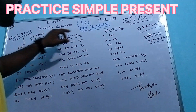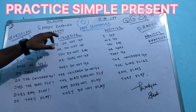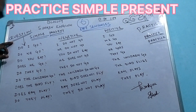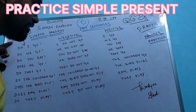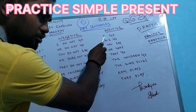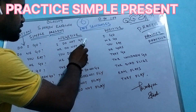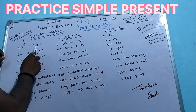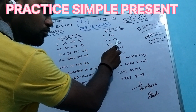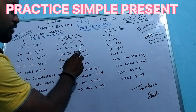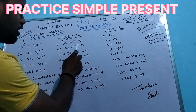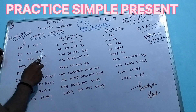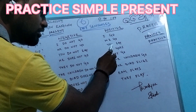Simple present: Positive sentence, Negative sentence, and Interrogative sentence. I go. I do not go. Do I go? We go. We do not go. Do we go?